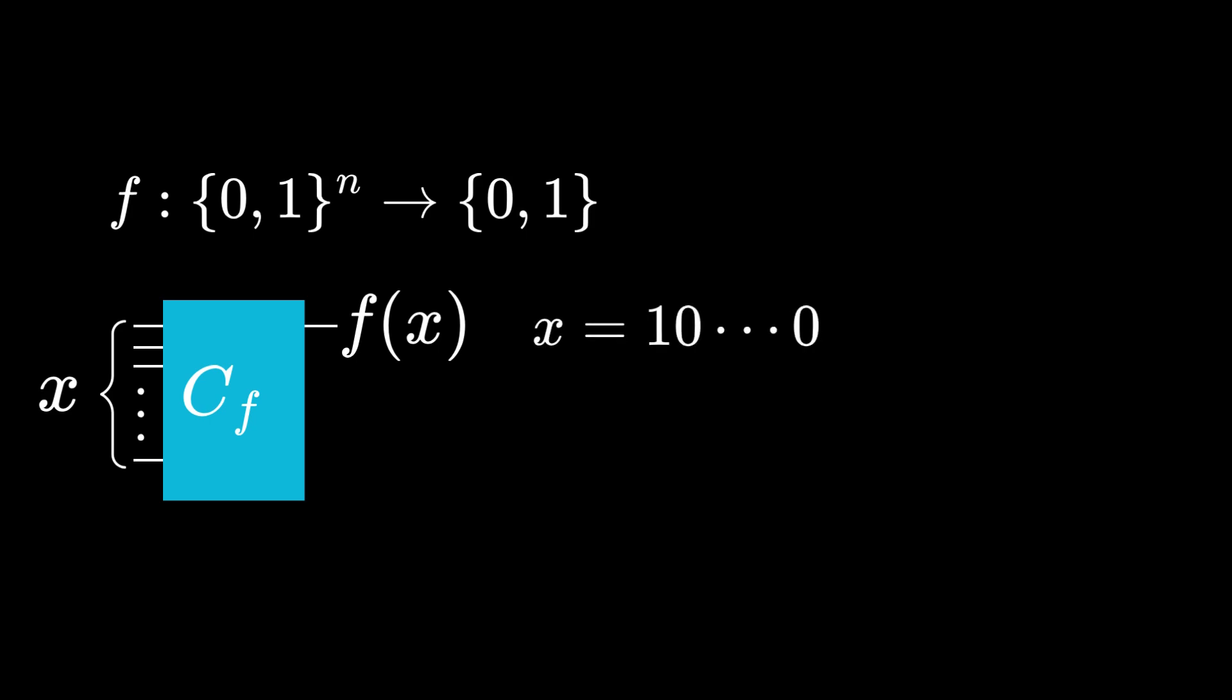In the classical case, if we ask f to calculate x = 1000, then the output is u1, the first bit of secret string u, because it only multiplies 1 by u1, and the rest of the terms are 0. If we compute f of x where x equals 0100, then the output is u2, with the same reasoning.